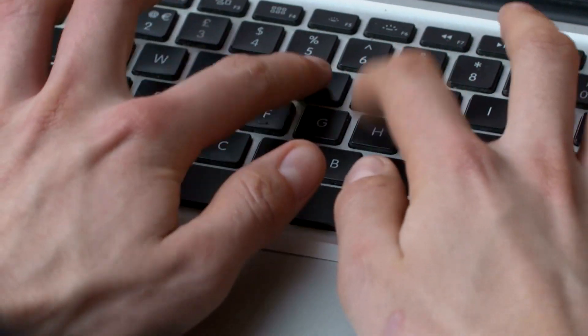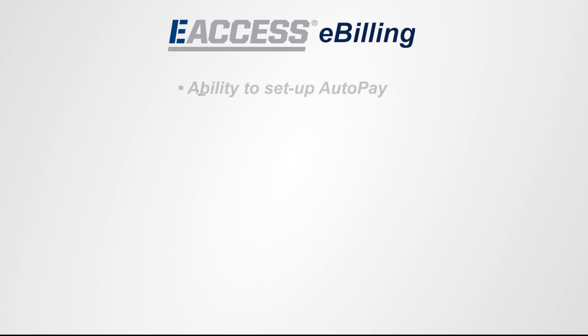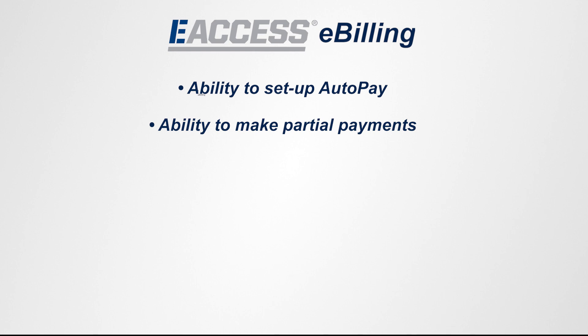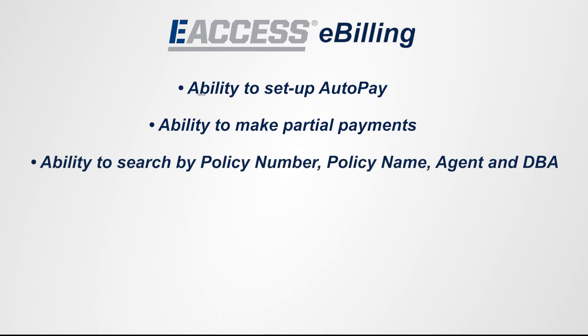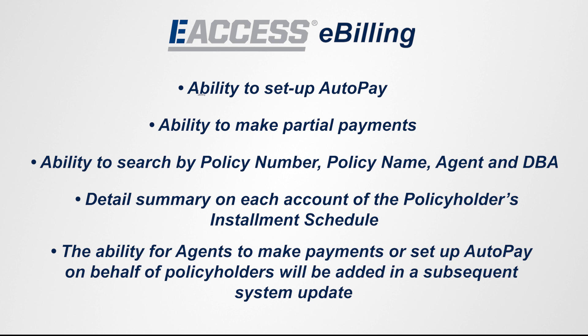Several components of the new e-access are designed to increase ease and flexibility, perhaps none more so than the new e-billing options, which provides the ability to set up auto-pay, the ability to make partial payments, ability to search by policy number, policy name, agent, and DBA, detail summary on each account of the policyholder's installment schedule, and the ability for agents to make payments or set up auto-pay on behalf of policyholders will be added in a subsequent system update.